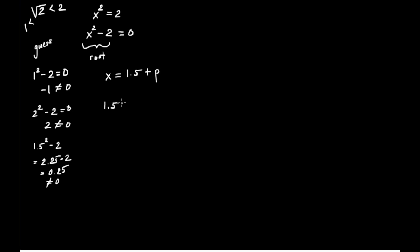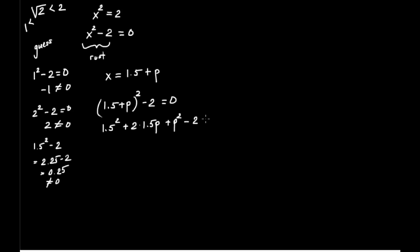We substitute 1.5 plus p into the polynomial equation, getting (1.5 plus p) squared minus 2 equals 0. Expanding using the binomial theorem gives 1.5 squared plus 2 times 1.5p plus p squared minus 2 equals 0. Writing this in quadratic form, we get p squared plus 3p plus 0.25 equals 0 — a quadratic equation in p.